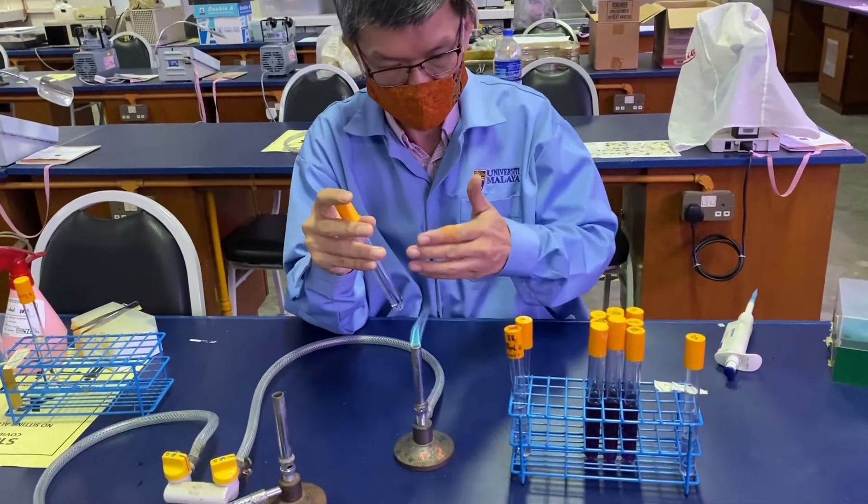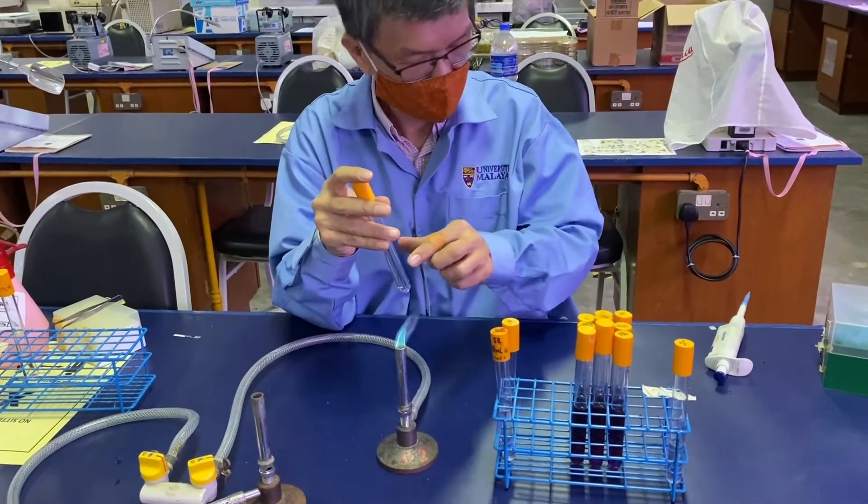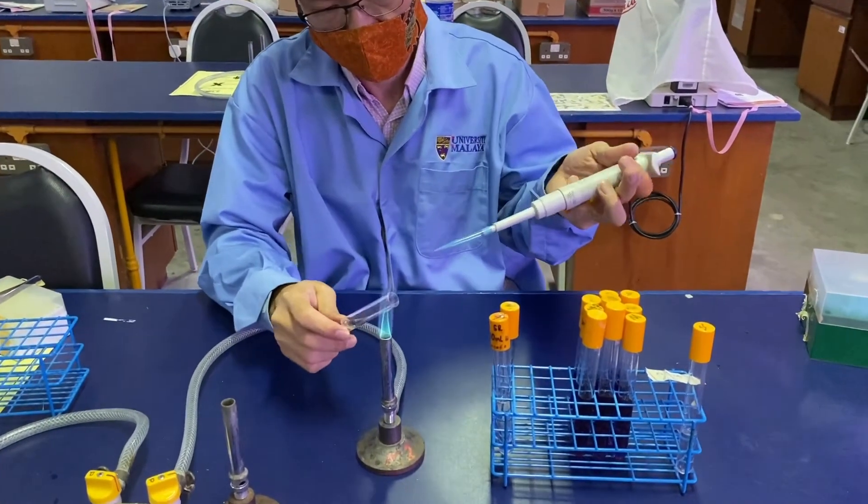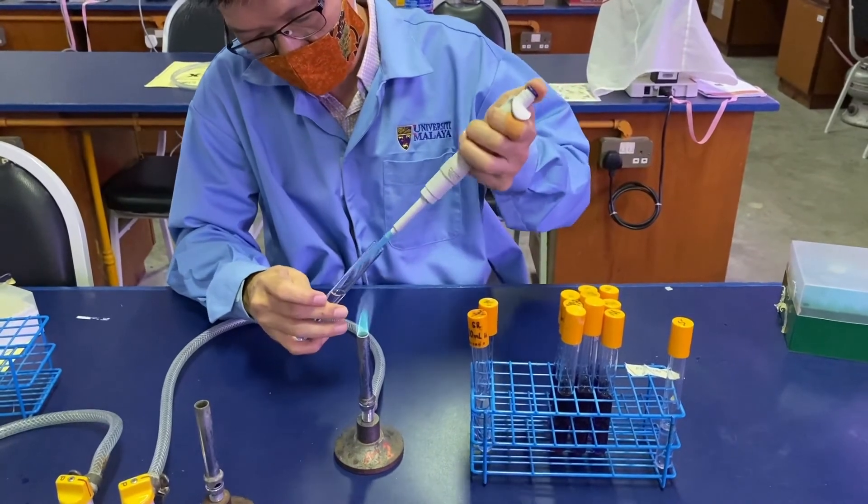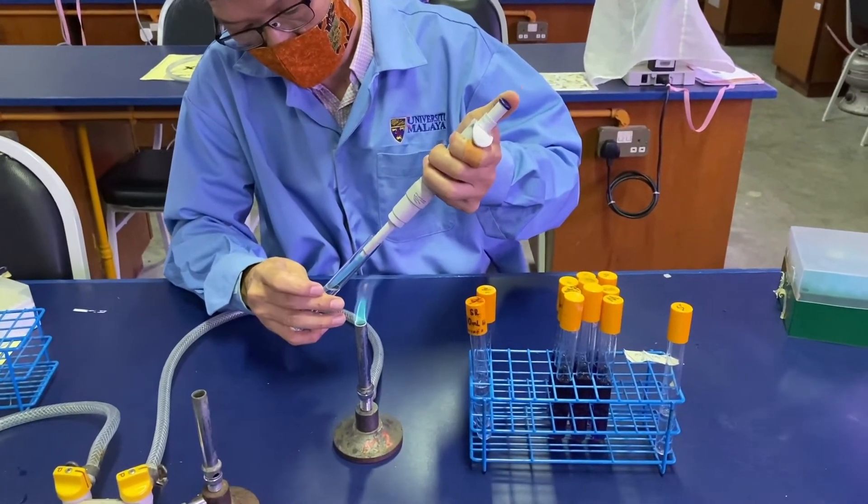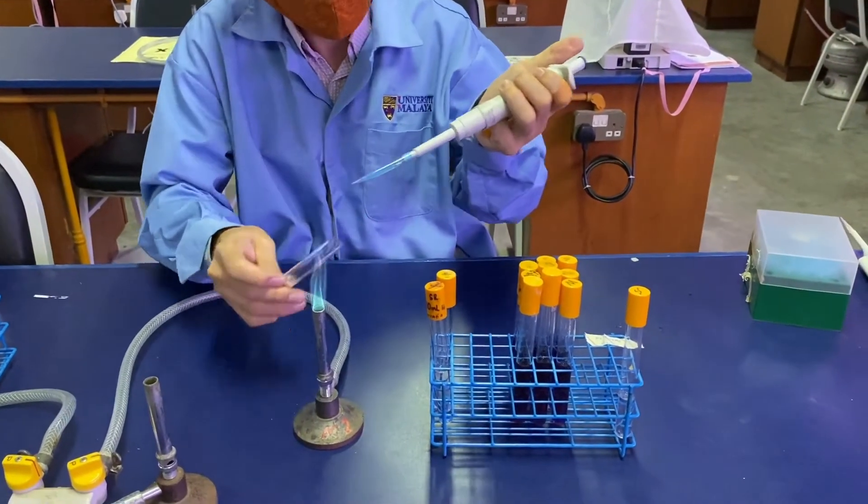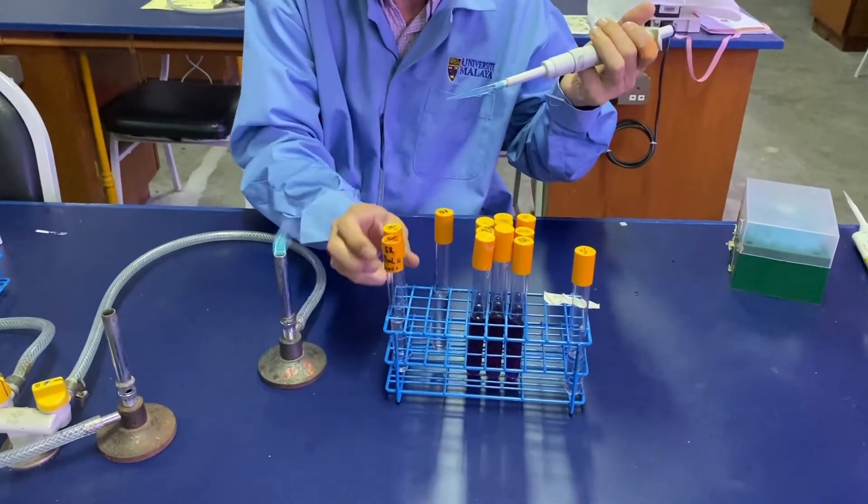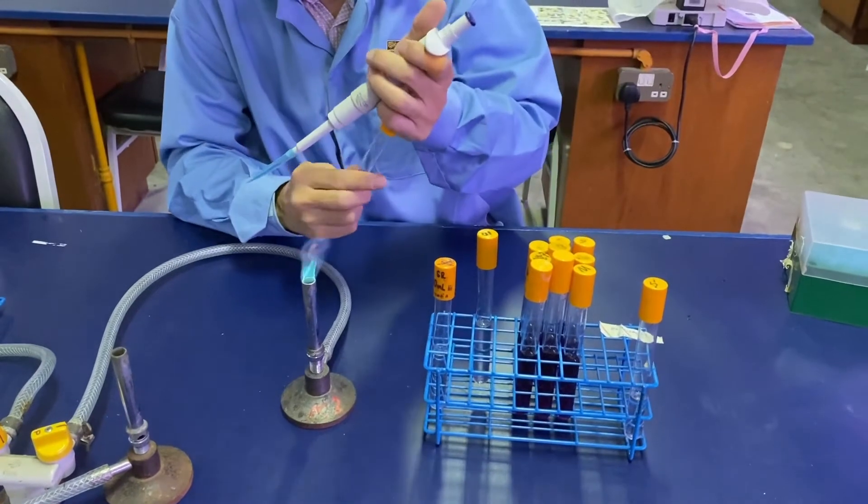Once you have vortexed the test tube, you can continue with the serial dilution. One milliliter from the minus one tube proceeds to the minus two tube.